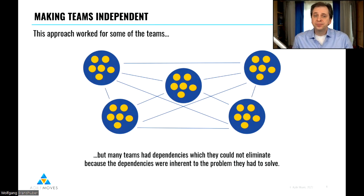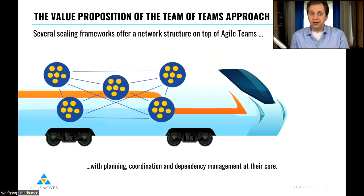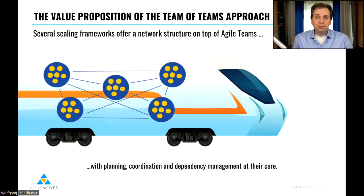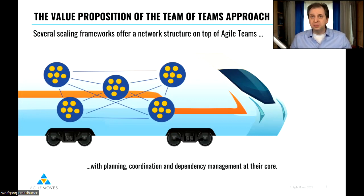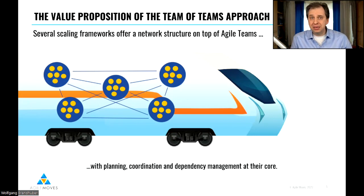Over time, several scaling frameworks emerged offering a network structure on top of agile teams, saying you have to plan, coordinate, and manage dependencies together. On top of the network structure of the agile teams, you can establish another layer of network structure to orchestrate these teams so that they can collaborate in an agile mode.